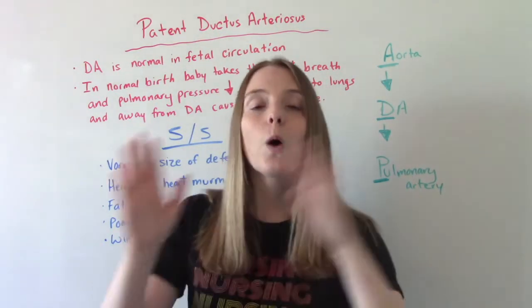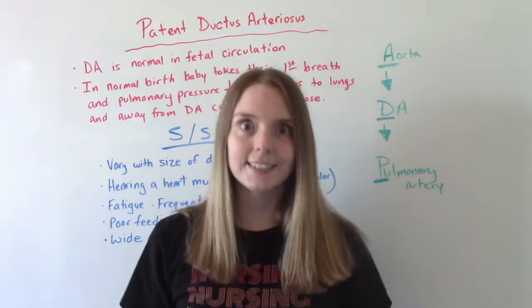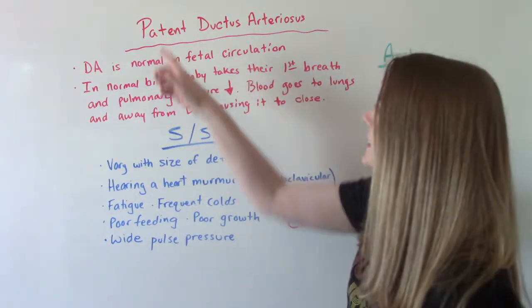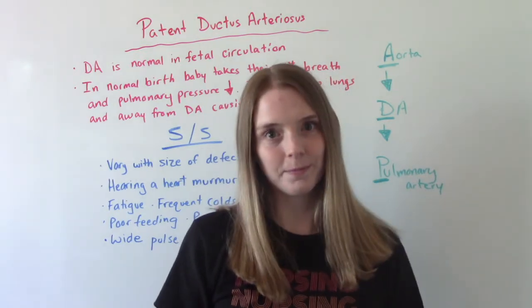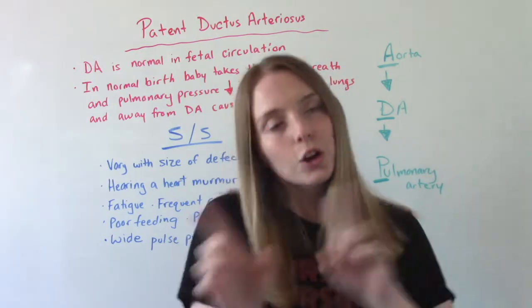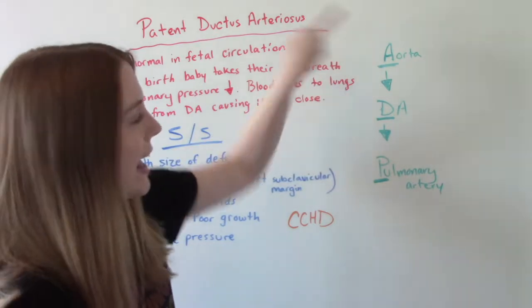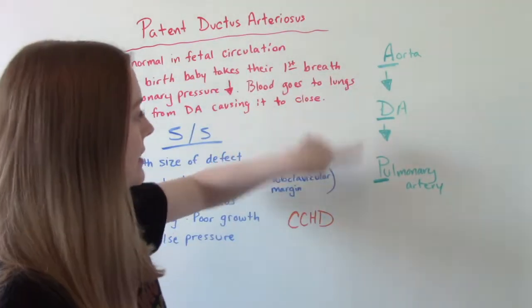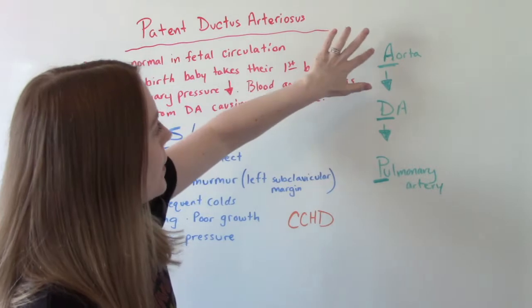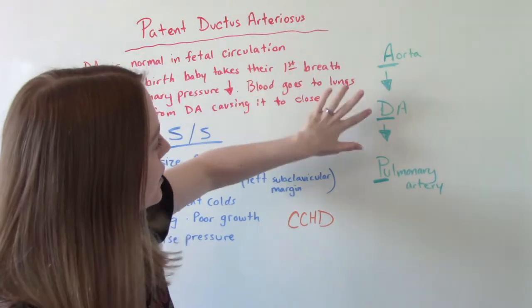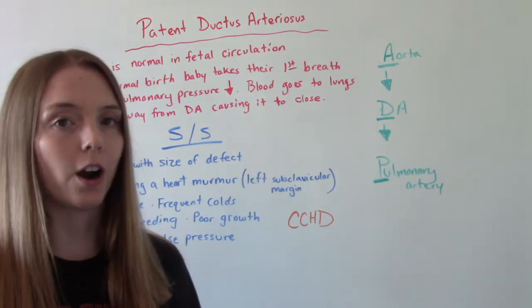So what we're talking about in this video is when it doesn't close — patent means it stays open. A cute little thing you can remember: our PDA, but you can do it backwards — ADP. The blood flow goes from the Aorta to the Ductus arteriosus to the Pulmonary artery.